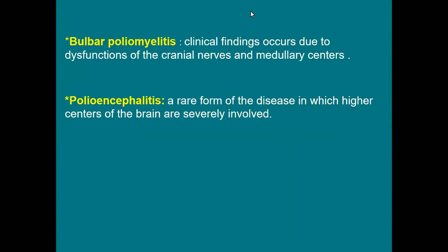The other type is bulbar polio. If the virus reaches the medulla oblongata, which contains the nuclei of the glossopharyngeal and vagus nerves and the medullary centers — cardiac, respiratory, and vasomotor — clinical manifestations arise from involvement of these structures. The glossopharyngeal and vagus nerves supply the soft palate, pharynx, and larynx. Paralysis causes weakness of the palate and pharynx, inability to swallow, and accumulation of saliva leading to asphyxia.